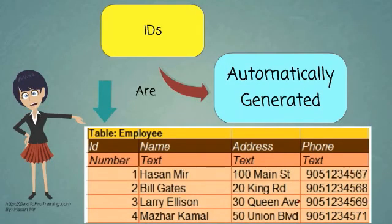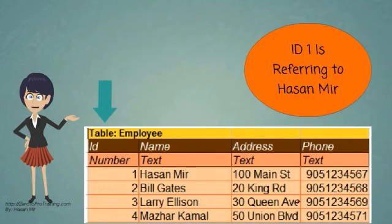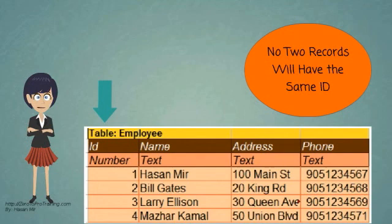Mostly, the IDs are automatically generated by the system. Once a record is given an automatically generated ID, it could always be referred to with this ID. No two records will have the same ID.